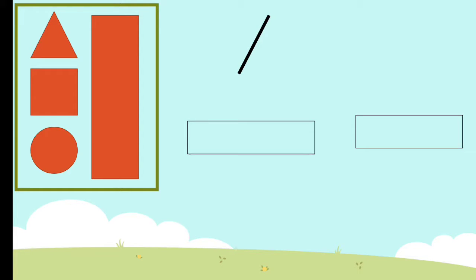First we take a triangle — we have one slanting line, another slanting line, and one sleeping line. All these lines, even though they are slanting lines, they are very straight. It goes very straight; it is not curved like this. So a triangle, a square, and a rectangle are made up of straight lines.